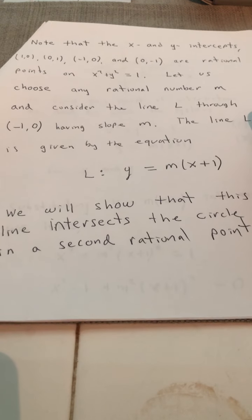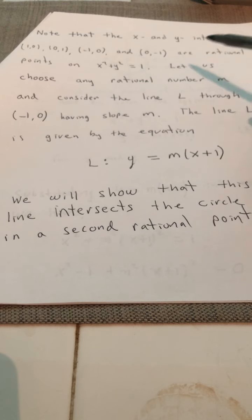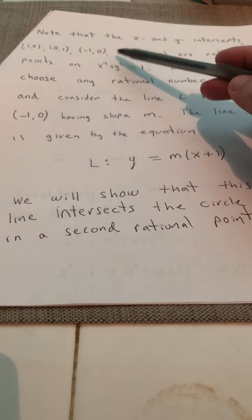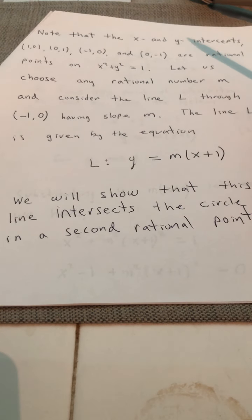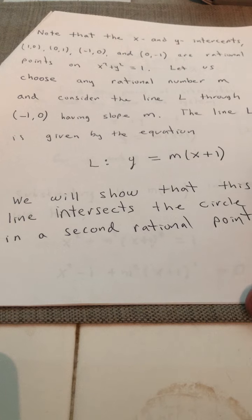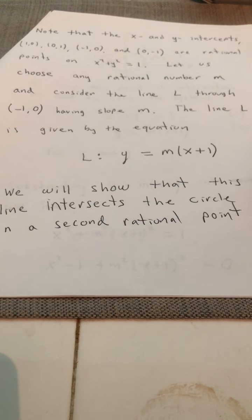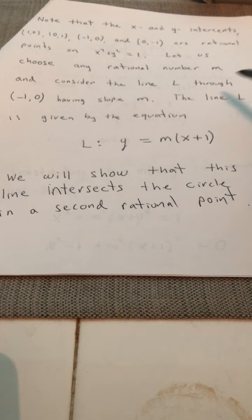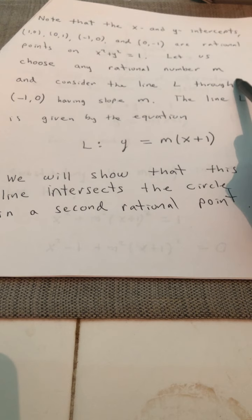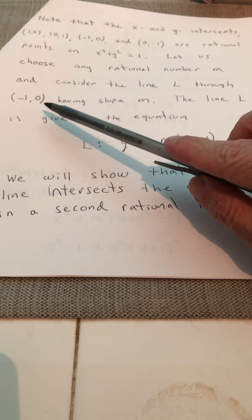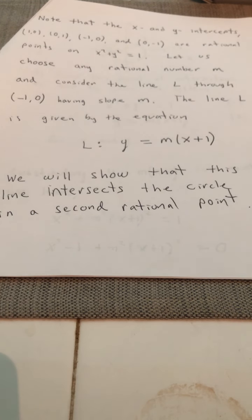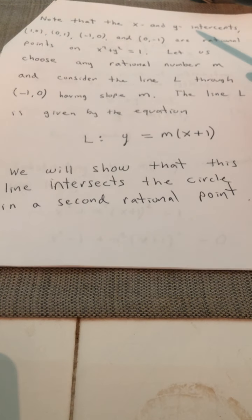So let's start with one of them. The point we're going to start with is one of the x-intercepts, negative one, zero. And let's choose some rational number m. And m is going to be the slope of the line going through the point negative one, zero. Now, of course, there's more than one line that goes through the point negative one, zero, and having slope m.